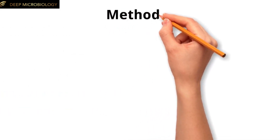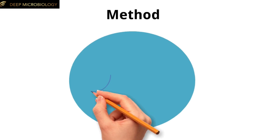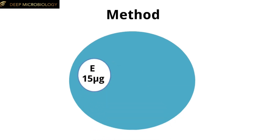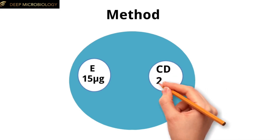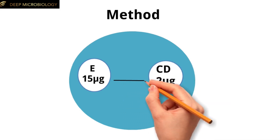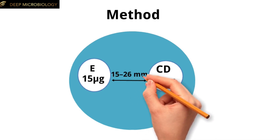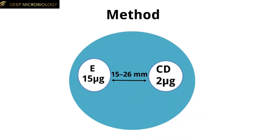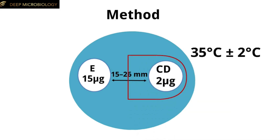Both the erythromycin disc, 15 micrograms, and the clindamycin disc, 2 micrograms, are placed at a distance of 15 to 26 millimeters from each other on a Mueller-Hinton agar plate, and then incubated overnight at 35 degrees Celsius, plus or minus 2 degrees Celsius. After overnight incubation, results are interpreted as indicative of inducible clindamycin resistance if there is flattening of the zone of inhibition adjacent to the erythromycin disc, referred to as the D-zone.